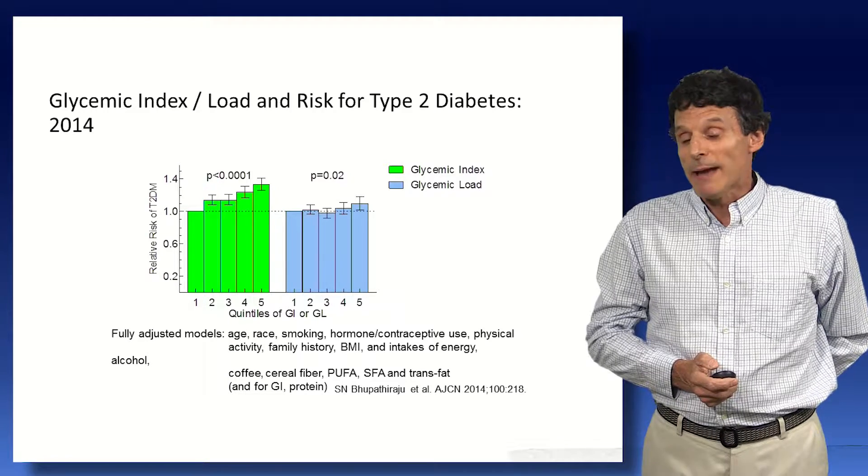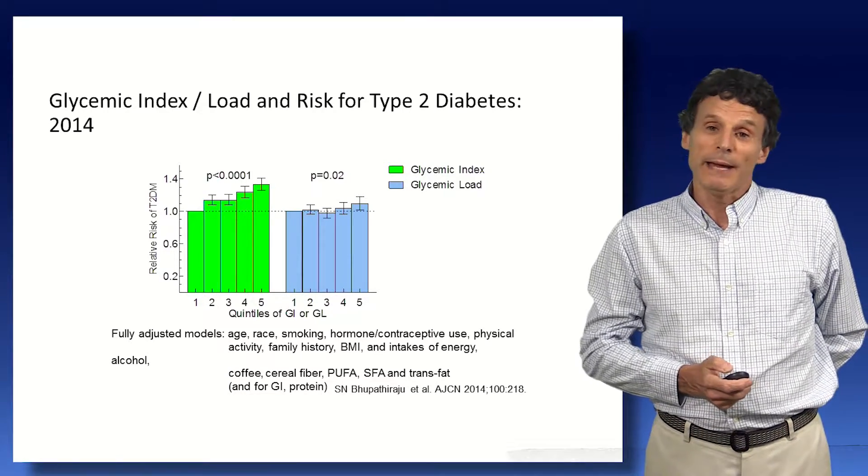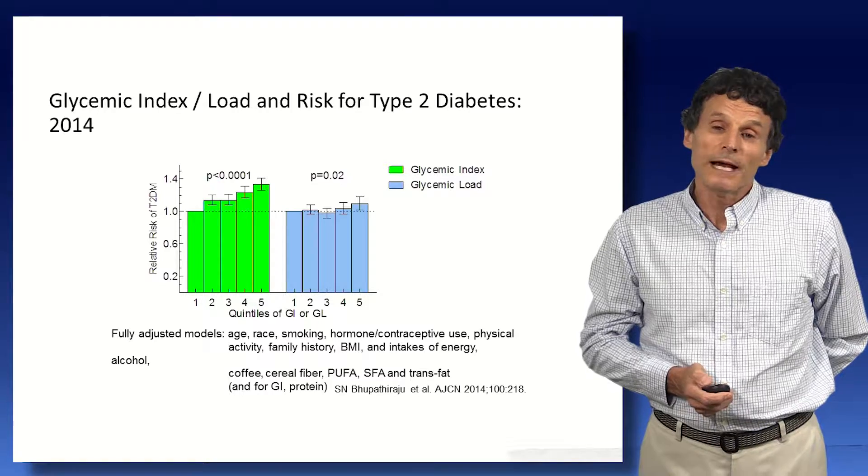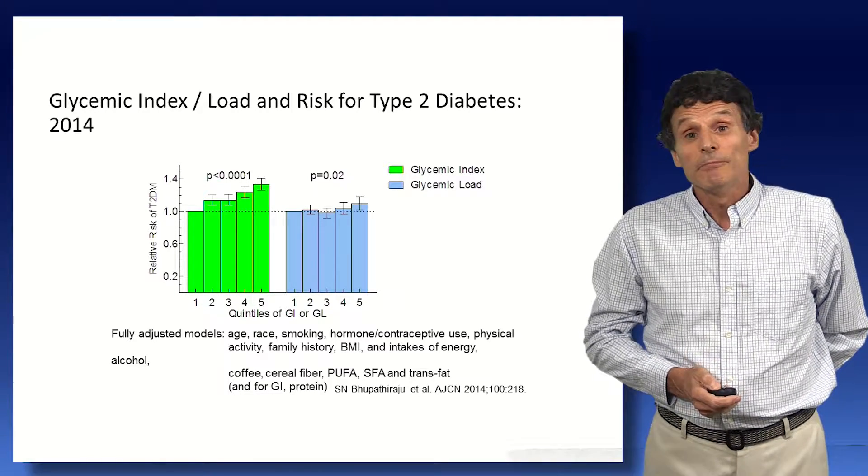This is a most recent analysis of the Harvard group's prospective studies showing that high GI diet increases the risk for developing type 2 diabetes. Carbohydrate, it's not widely appreciated. The amounts of carbohydrate really has no impact. And so glycemic load, which is the GI times the carbohydrate, has very little effect.